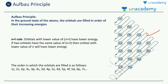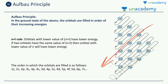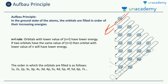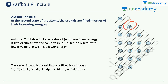To find the increasing order of energies, you follow the arrows drawn through the diagram. The first arrow gives 1s. The second arrow gives 2s. The third arrow gives 2p. Then 3s, then following the next arrow you get 3p and 4s. So the order is: 1s, 2s, 2p, 3s, 3p, 4s, and so on — you fill electrons following these arrows one by one.